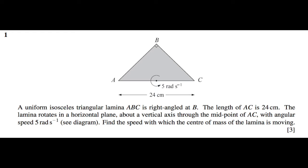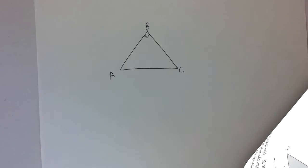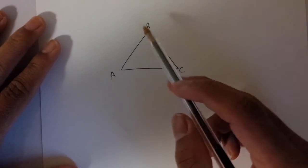The lamina rotates in a horizontal plane about a vertical axis through the midpoint of AC with angular speed 5 radians per second. Find the speed with which the center of mass of the lamina is moving. First thing we do is set up the diagram.